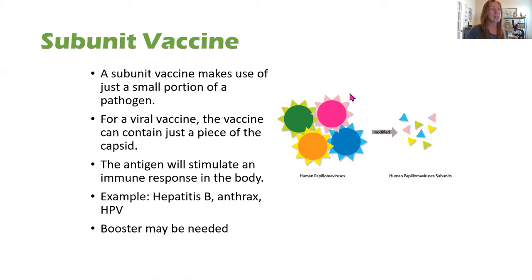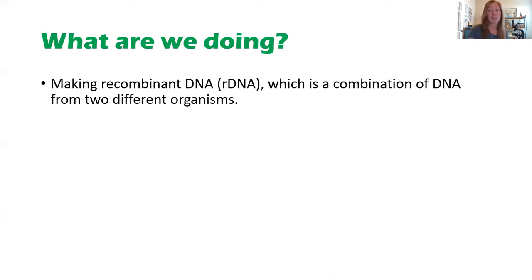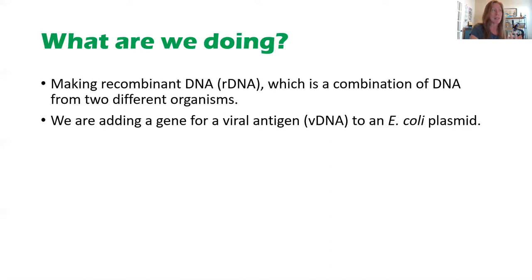Here you can see this is a human papillomavirus scenario. We're going to take some DNA for making one of these surface antigens and try to get some bacteria to manufacture that for us. We're going to make some recombinant DNA — taking DNA from the virus and putting it into DNA from our bacteria cell. We've got a combination of two different organisms, so a new combination of DNA: recombinant DNA.